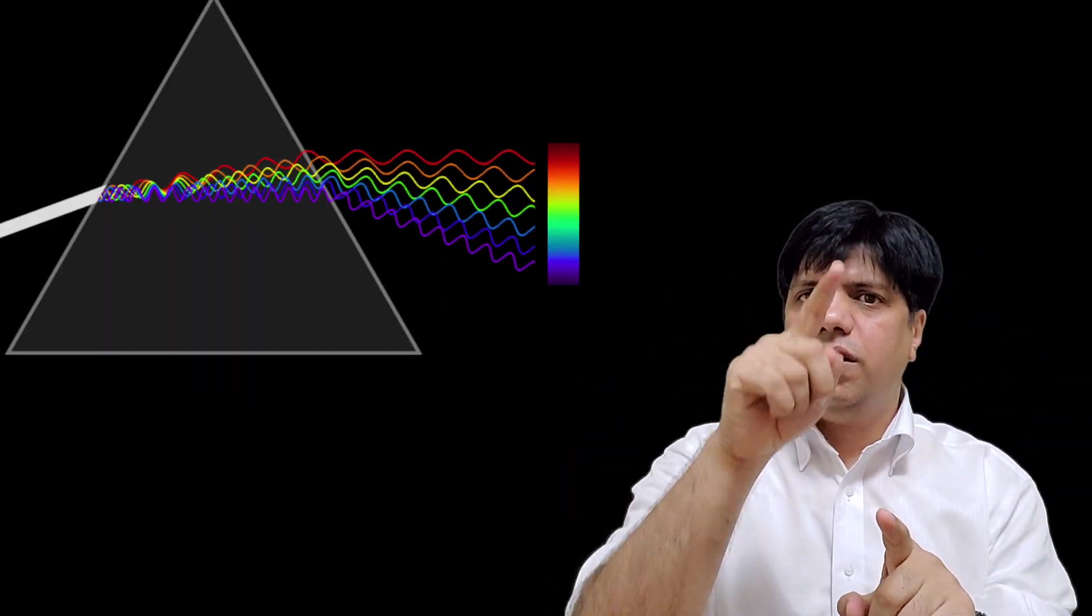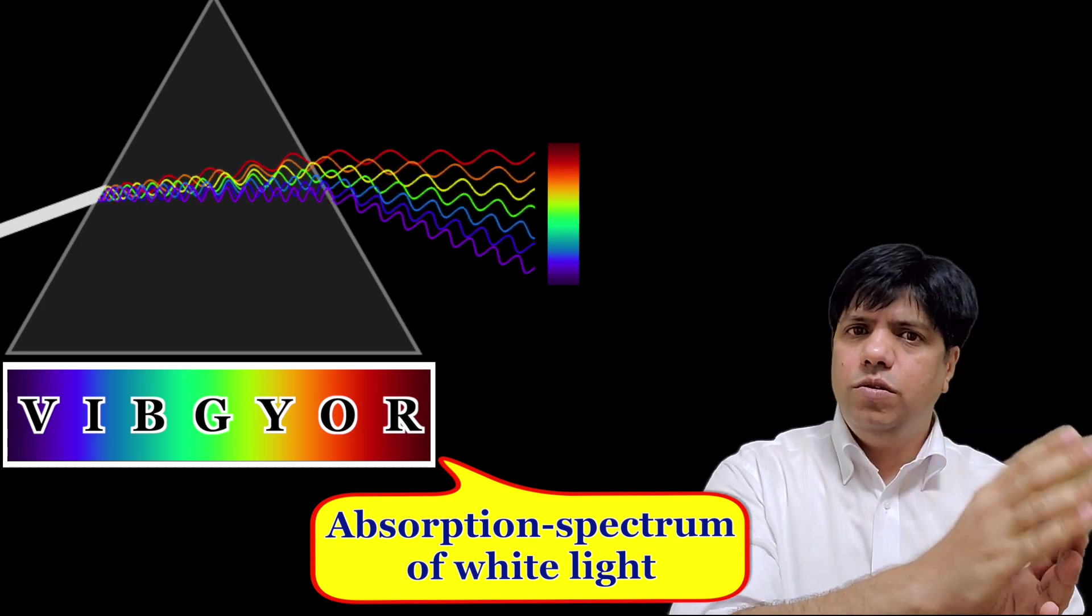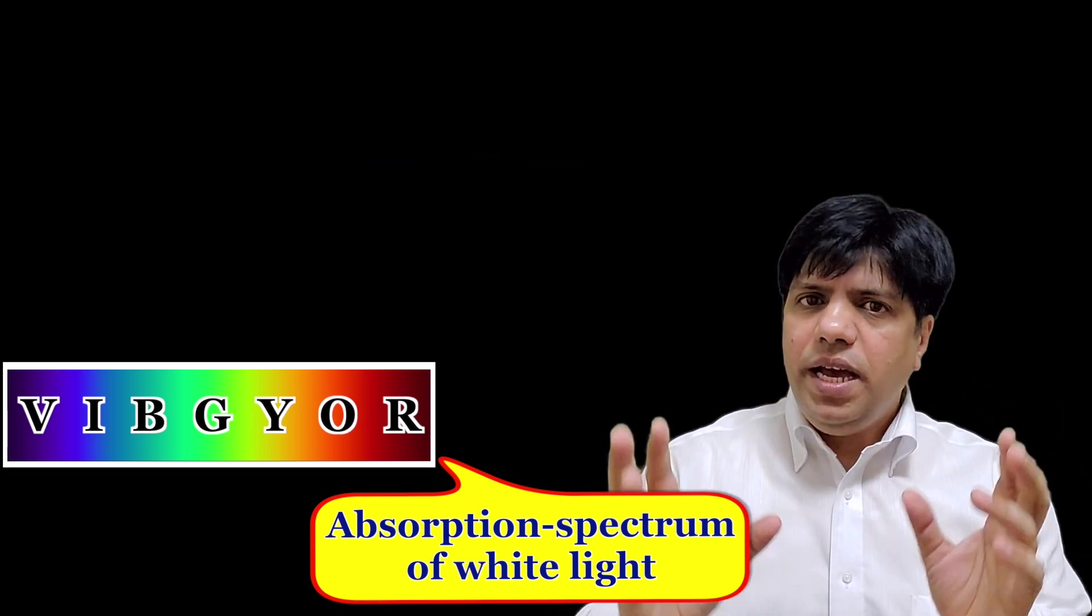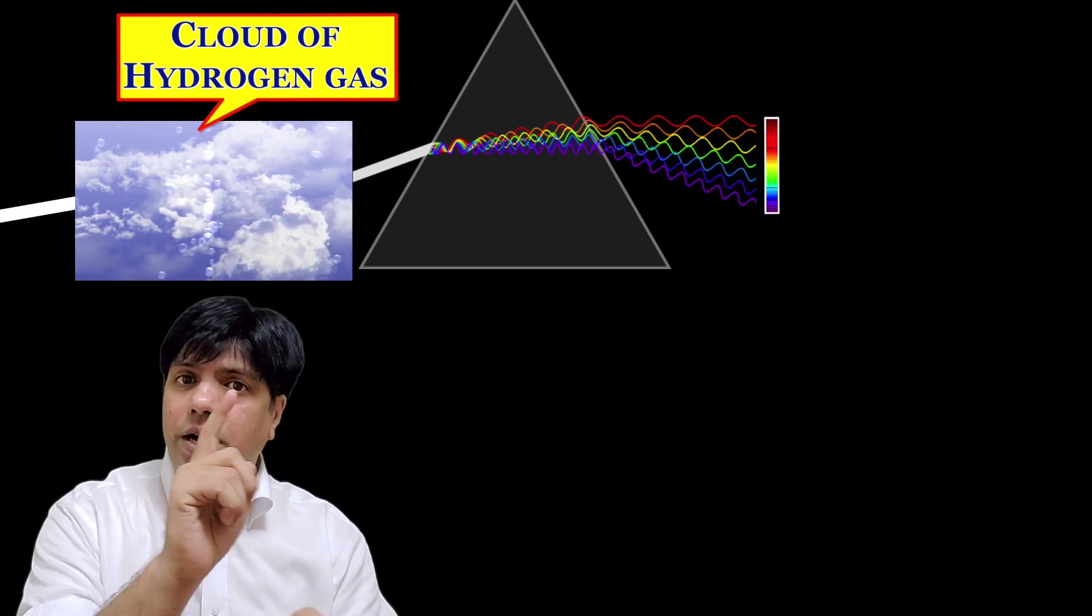What happens is you get seven colors of light, VIBGYOR, violet indigo blue green yellow orange red. Now imagine you pass the light to a cloud of hydrogen gas and then at the end of that you pass the resulting light to a prism. What you get is you get the spectrum of light but